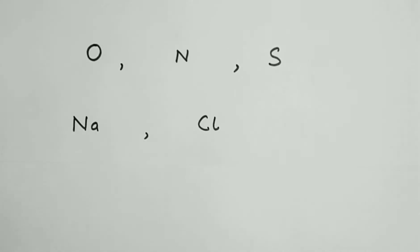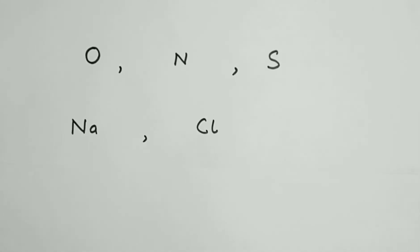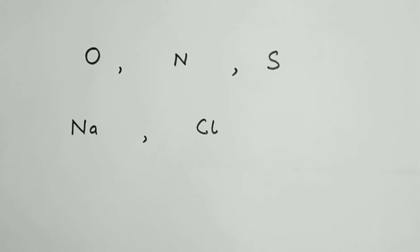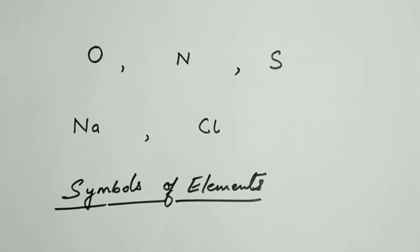Here some alphabets are written. What is the first thing that comes to your mind when you see these alphabets? Either the word 'element' comes to mind or the word 'symbols' comes to mind. These are actually symbols of elements.